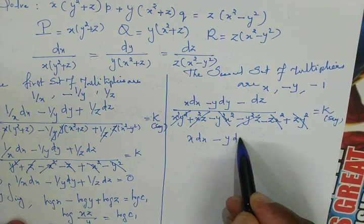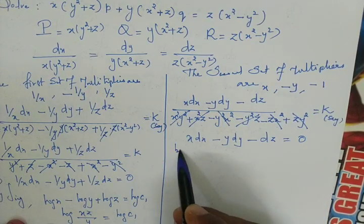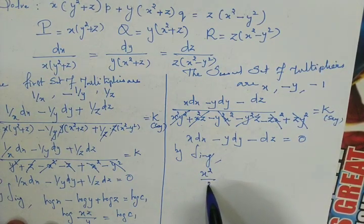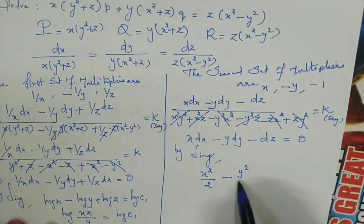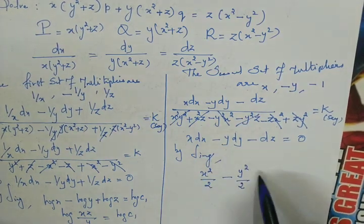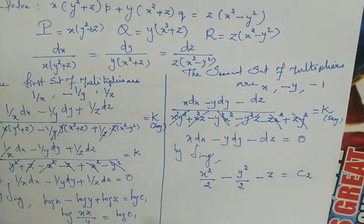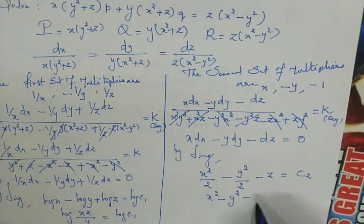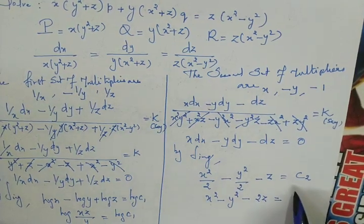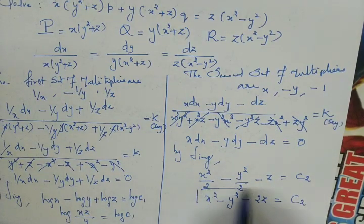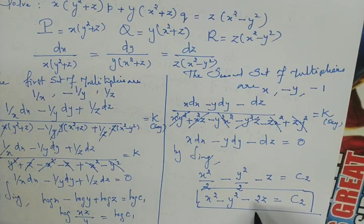Since the denominator is zero, we get x·dx - y·dy - dz = 0. Integrating: x²/2 - y²/2 - z = constant. Taking 2 as common and absorbing it into the constant gives x² - y² - 2z = c₂.